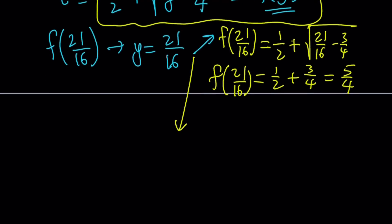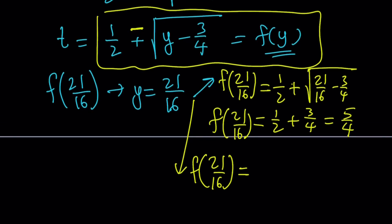Here's the second option using the minus sign. f of 21 over 16 can be written as 1 half minus 3 fourths, which is negative 1 fourth.